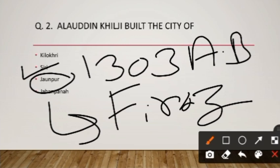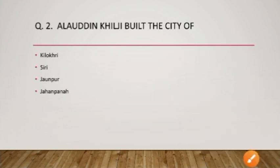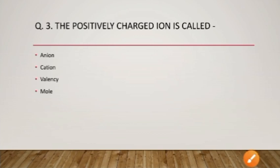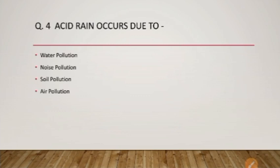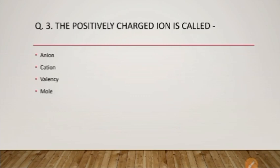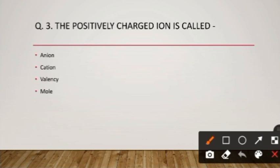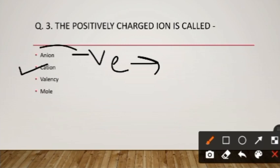The third question: the positively charged ion is called — joh dhana veshit ion hote hain unko cations kaha jata hai. So positively charged ions are known as cations, and option B is the right answer. Particles which are negatively charged — joh negatively charged ions hote hain — are called anions.